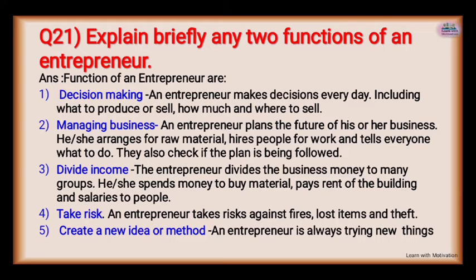Number three, divide the income: the entrepreneur divides the business money into many groups — spending money to buy material, pay rent of the building, and pay salaries to people. Number four, take risk: an entrepreneur takes risk against fire, loss, lost items, and theft. Number five, create a new idea or method: an entrepreneur is always trying new ideas.